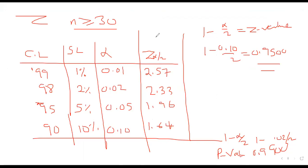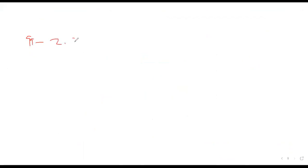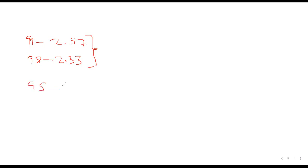These are the most common confidence levels. To summarize: at 99%, Z = 2.57; at 98%, Z = 2.33; at 95%, Z = 1.96; and at 90%, Z = 1.64. Master these values so you can use them fluently.